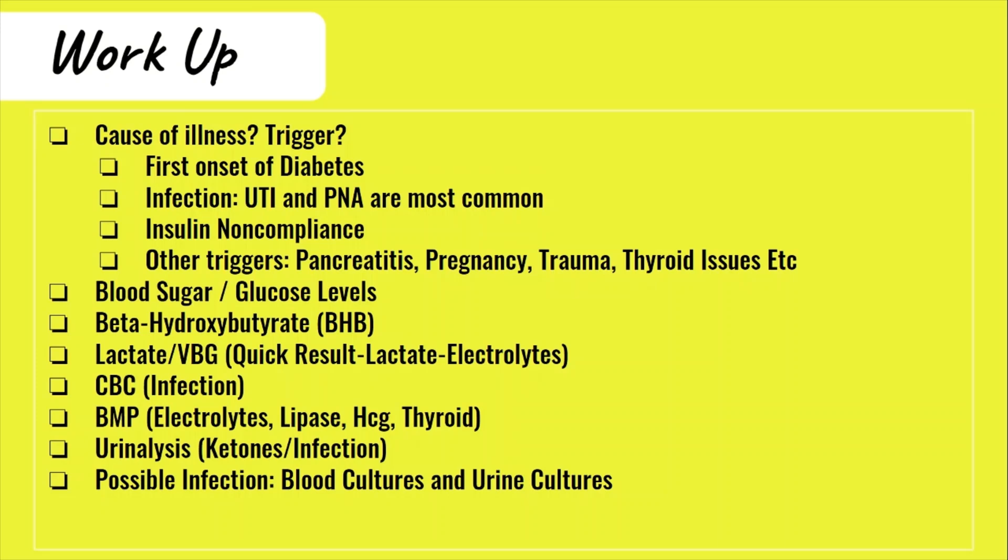A VBG may also be ordered, which results quickly and can give us important information like a rough value for electrolytes, the patient's pH, and a lactate — which, if elevated, signals hypoperfusion. A CBC can help figure out if an infection is present or other triggers like anemia. A basic metabolic panel will give us electrolytes, specific lab values related to organ systems, the bicarb, and will allow us to calculate the patient's anion gap. A urinalysis can help with detecting ketones and for infection in the urine.